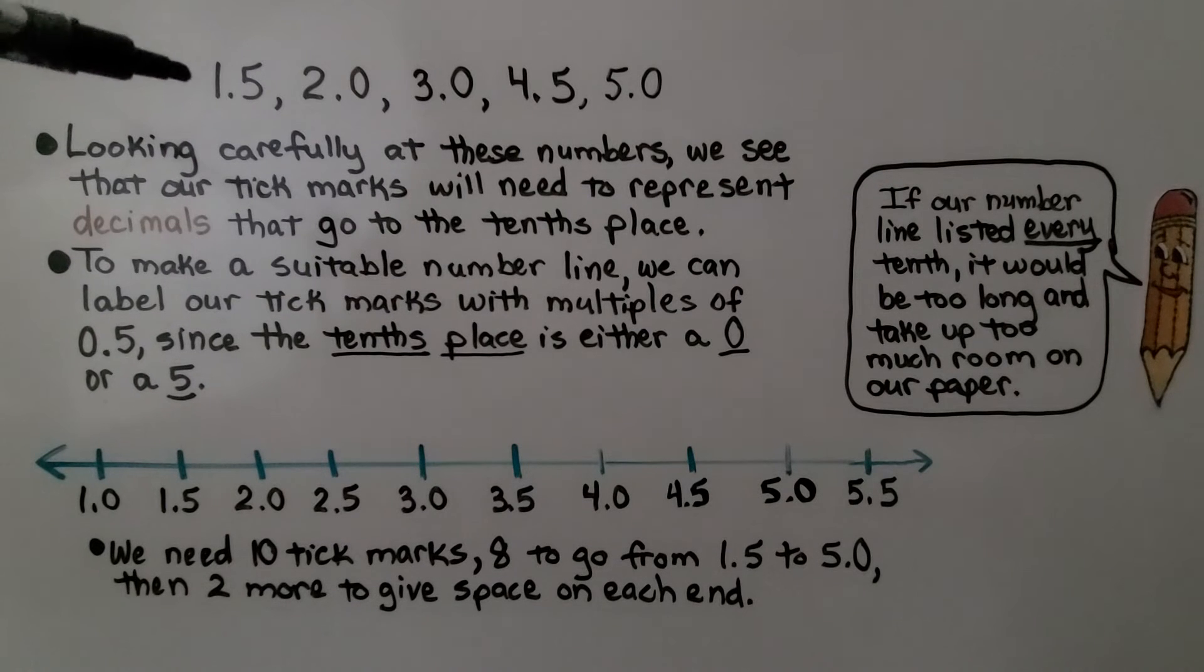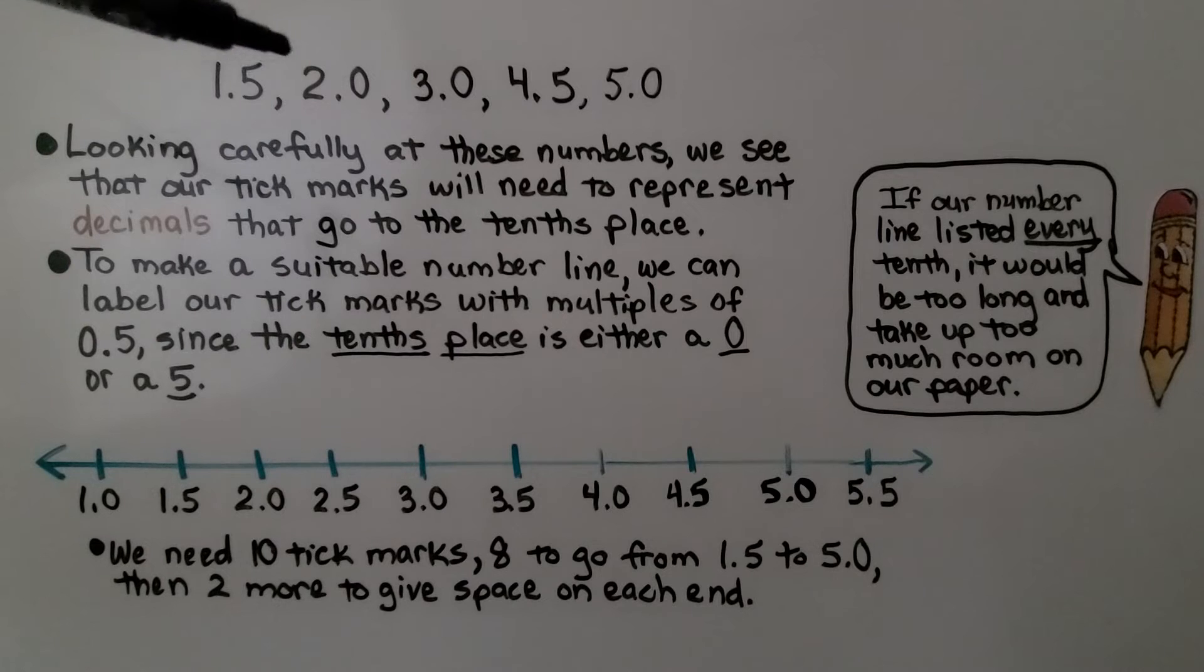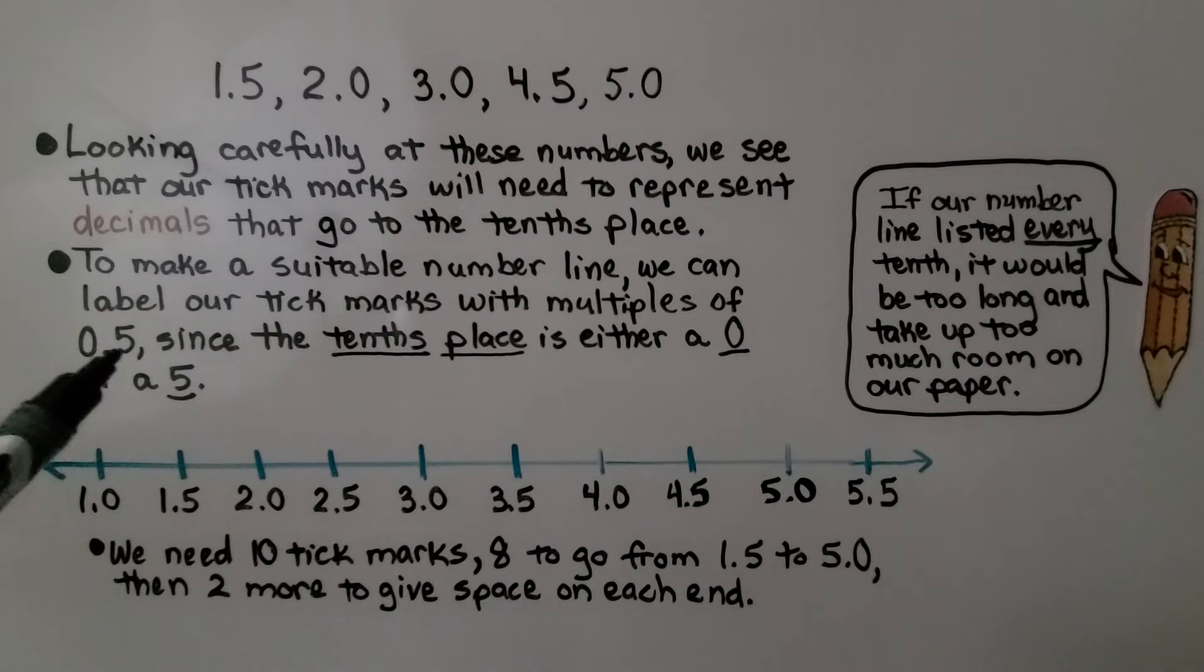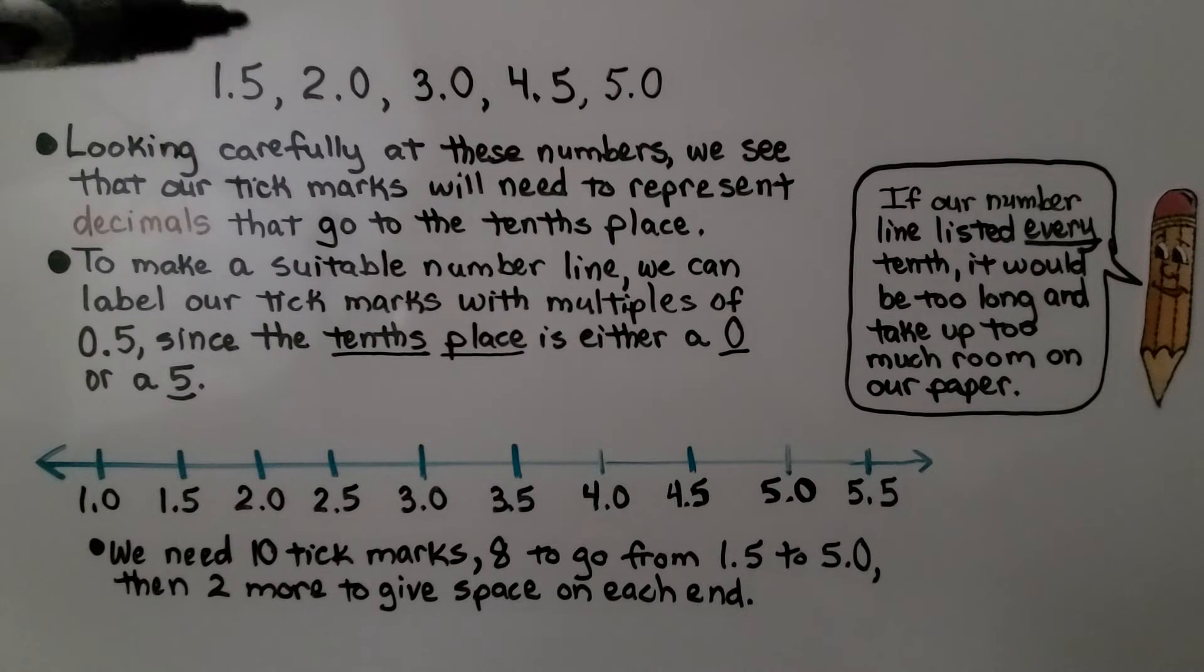Now we're given the numbers 1 and 5 tenths, 2, 3, 4 and 5 tenths, and 5. And looking carefully at these numbers, we see that our tick marks will need to represent decimals that go to the tenths place. To make a suitable number line, we can label our tick marks with multiples of 5 tenths, since the tenths place is either a 0 or a 5.